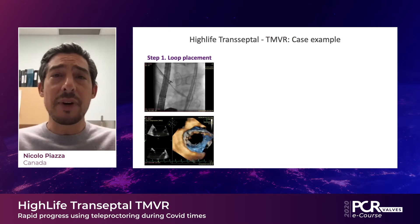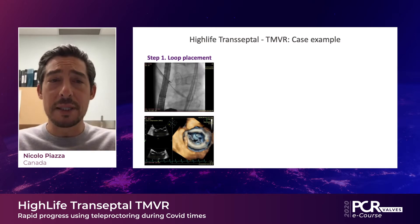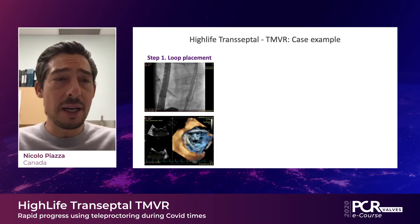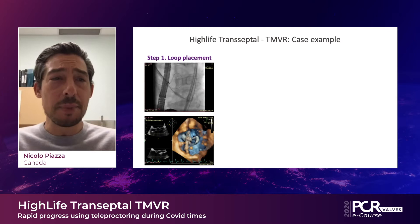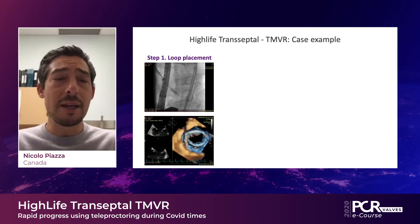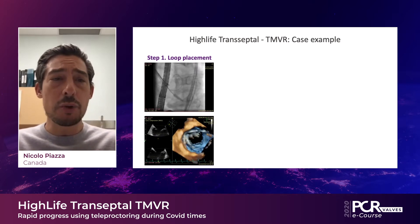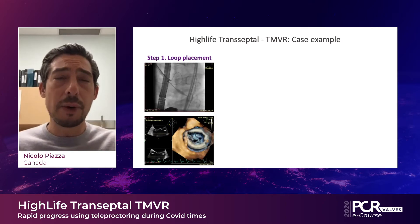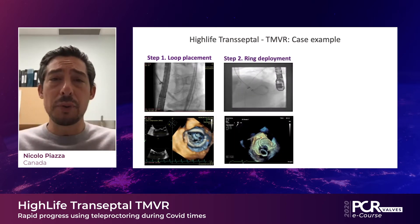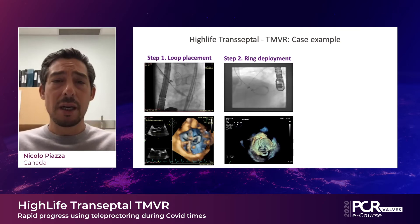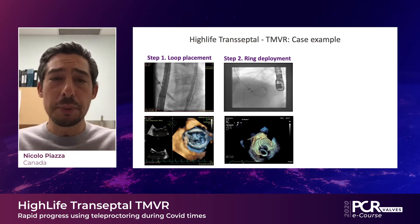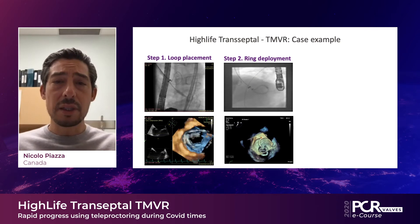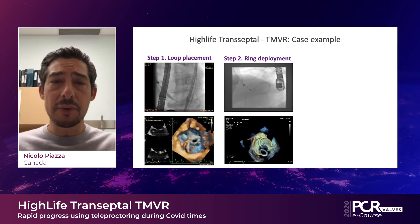In this next slide, we provide a case example of the HiLife transeptal transcatheter mitral valve replacement system. On the complete left-hand side, you have step one, which is loop replacement. You have both the fluoroscopic and echocardiographic images that demonstrate looping around the mitral valve leaflets. We are cinching to evaluate that we have properly placed the loop. Step two is ring deployment along the confirmed loop placement, and you can see again both the fluoroscopic and echocardiographic images.